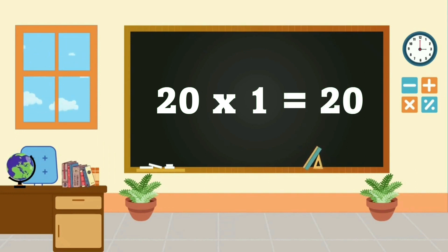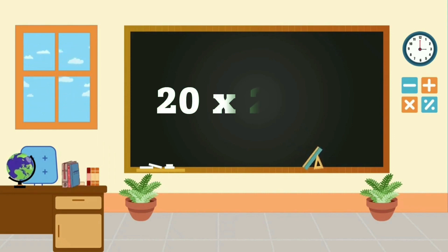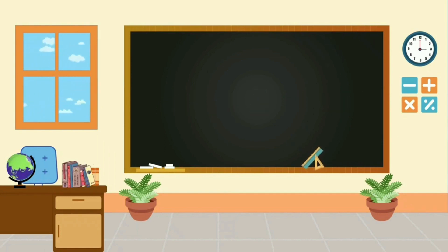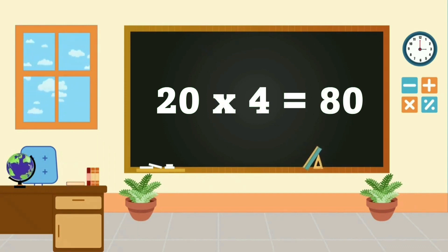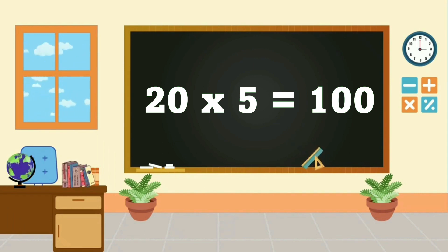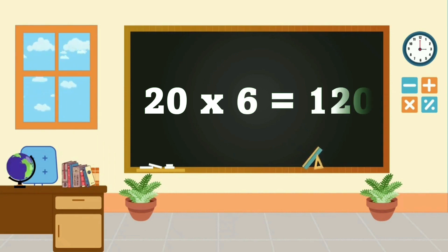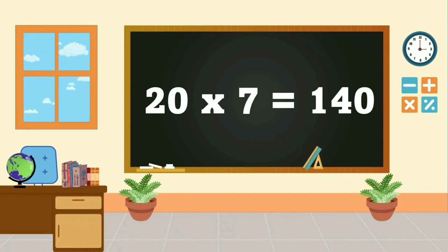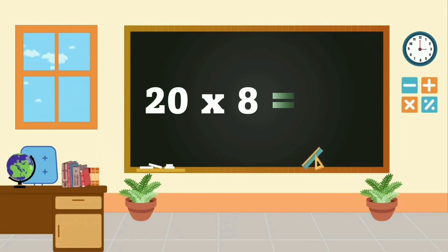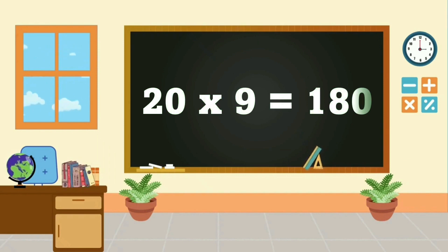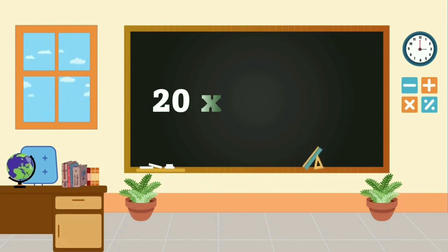20 times 1 is 20, 20 times 2 is 40, 20 times 3 is 60, 20 times 4 is 80, 20 times 5 is 100, 20 times 6 is 120, 20 times 7 is 140, 20 times 8 is 160, 20 times 9 is 180, 20 times 10 is 200.